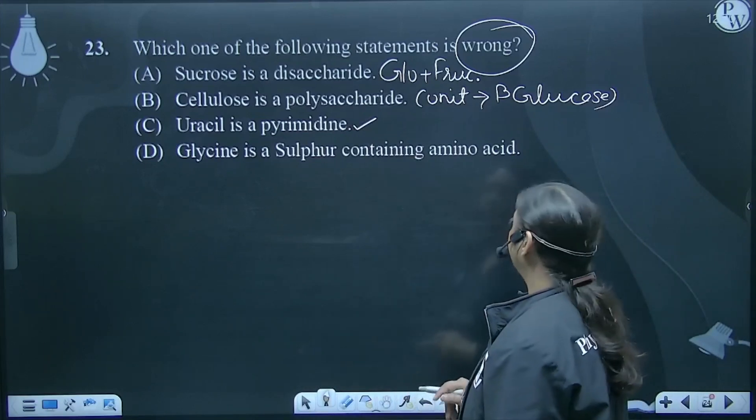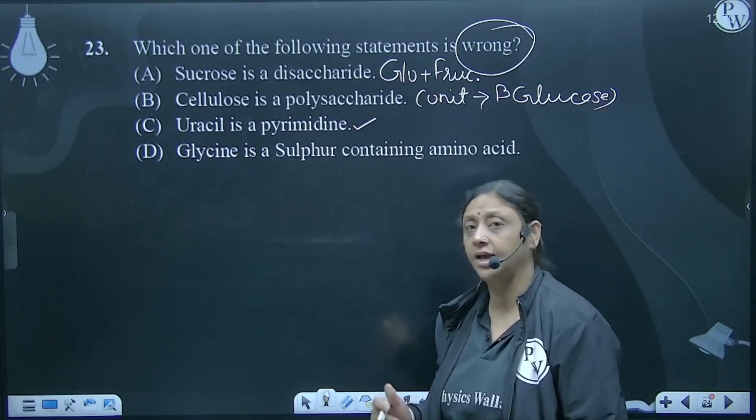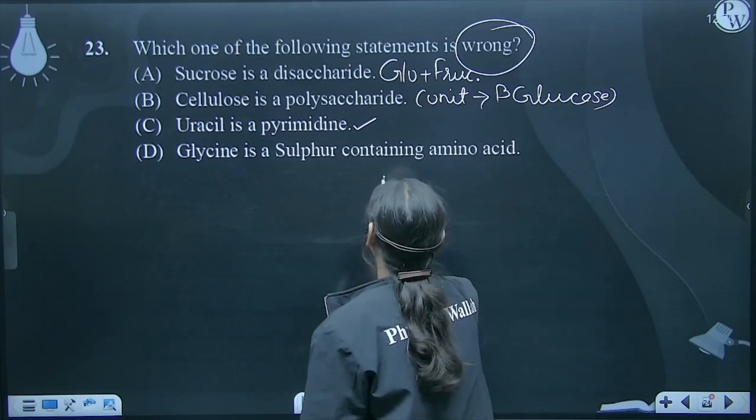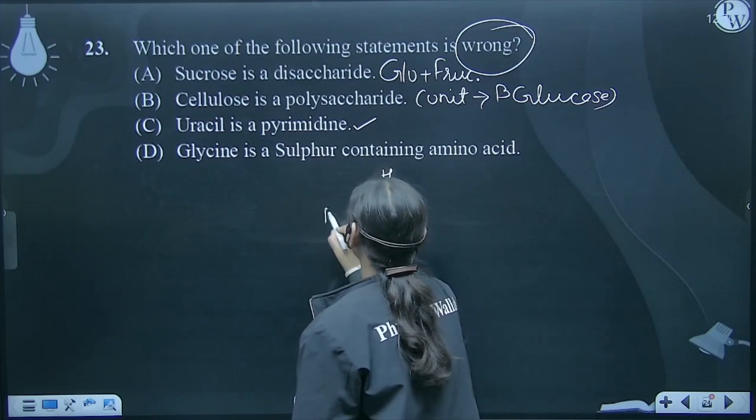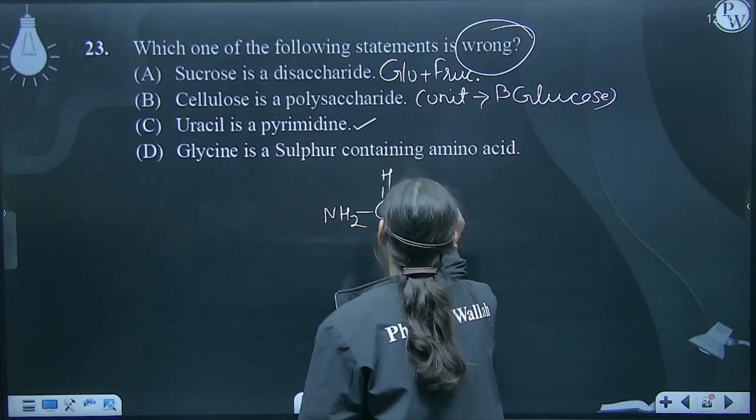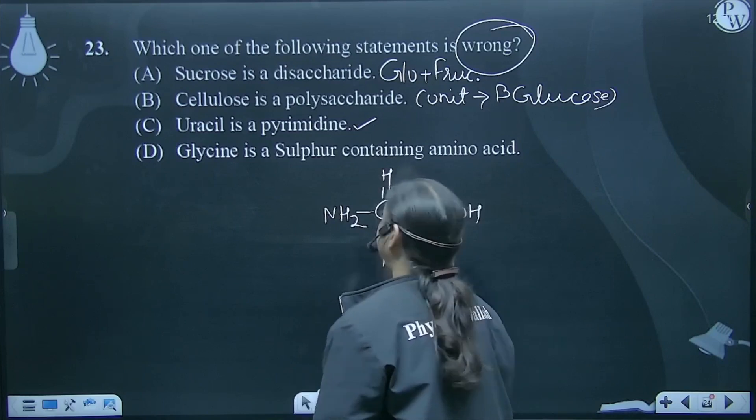Glycine is a sulfur-containing amino acid? No, not at all. The structure of glycine is in this way. This is glycine.